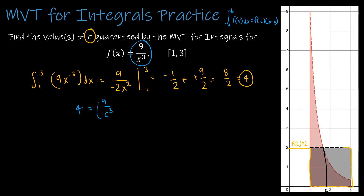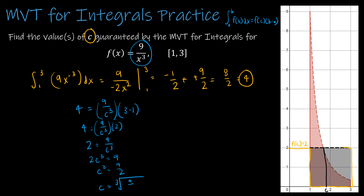So the area is 4. Setting up: 4 equals 9 over c cubed times 2. Dividing by 2 gives 2 equals 9 over c cubed. Multiplying both sides by c cubed and dividing by 2 gives c cubed equals 9 halves. So C equals the cubed root of 9 halves. I would leave it just like that, and you can verify with a calculator that it falls between 1 and 2.